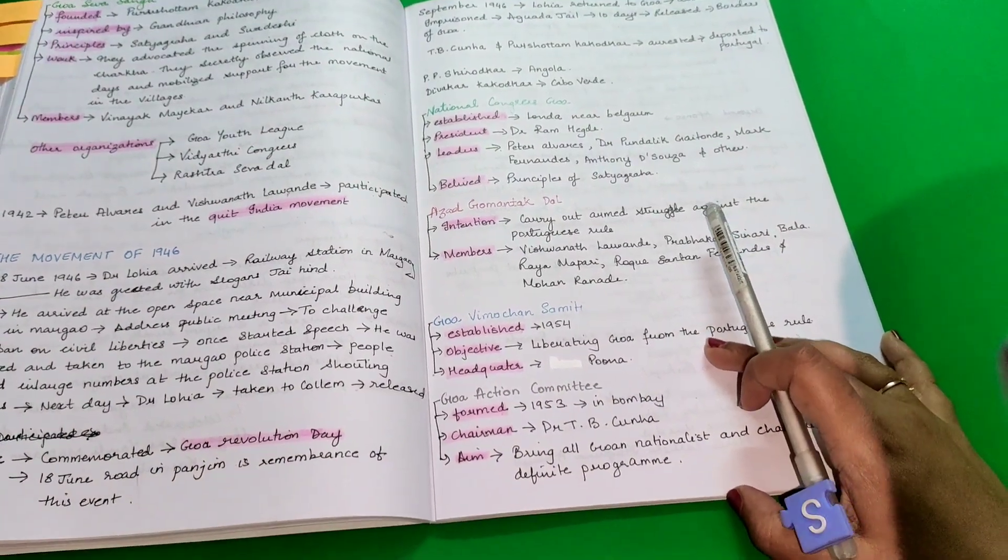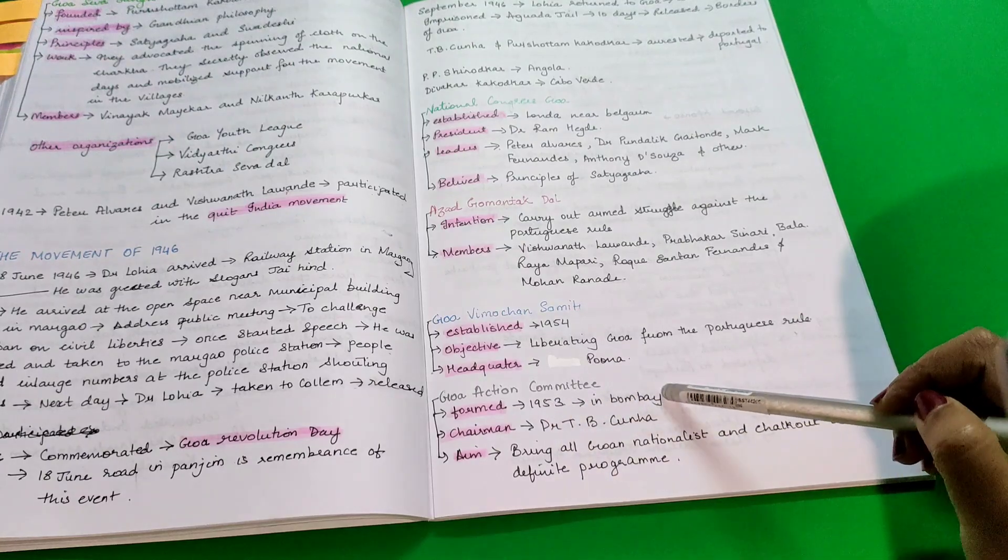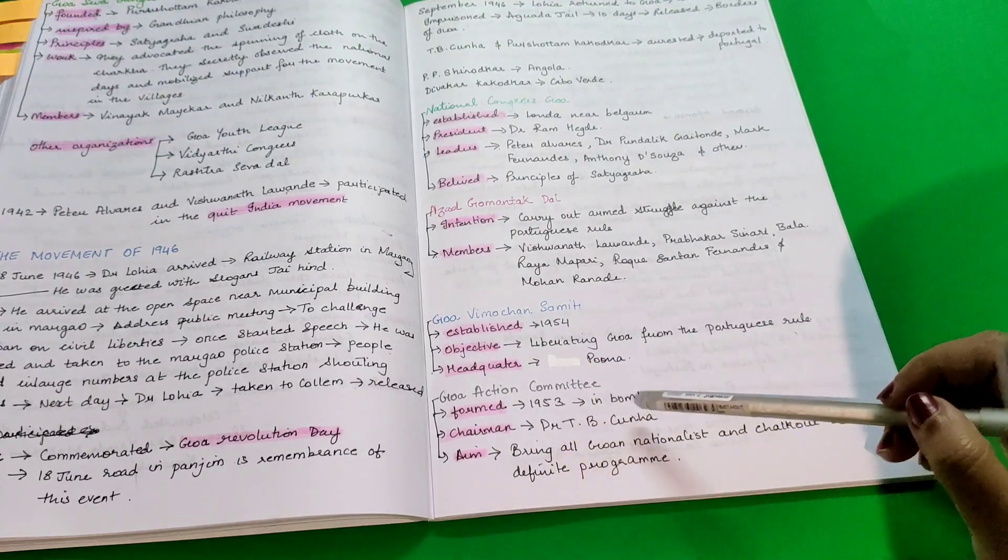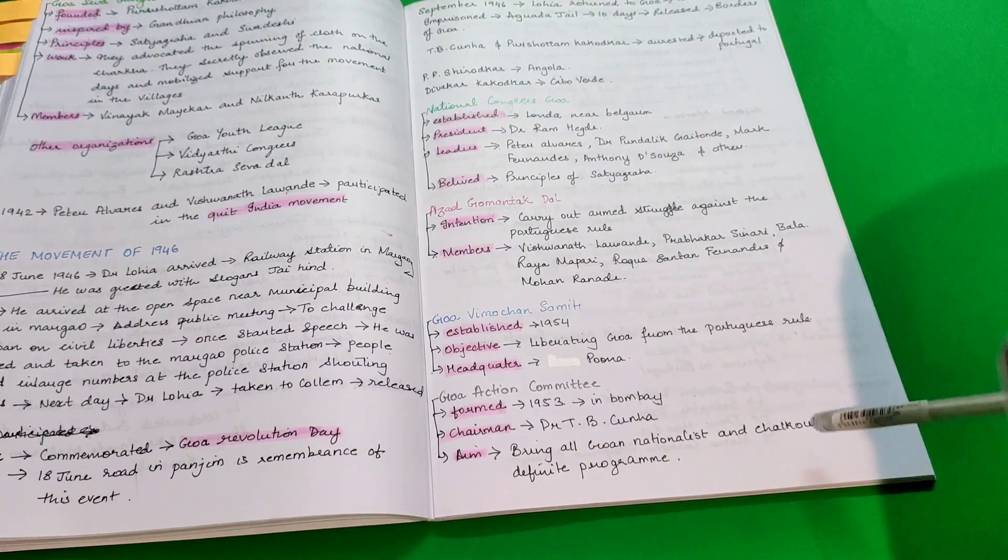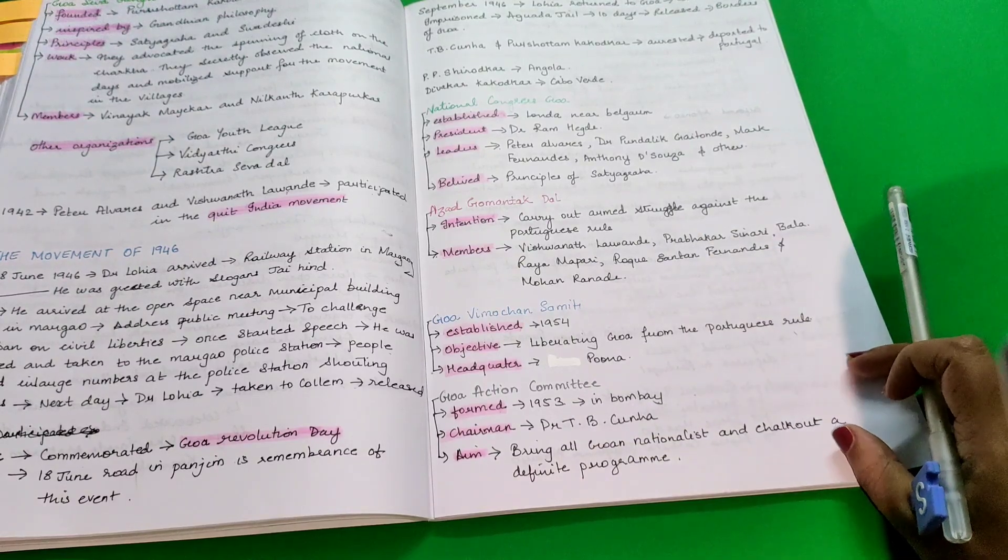Goa Action Committee was formed in 1953 in Bombay. The chairman was Dr. T.B. Cunha. Their aim was to bring all Goan nationalists and chalk out a definite program.